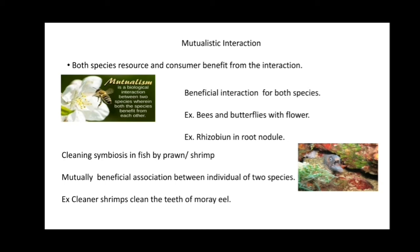Example: bees and butterflies with flowers — bees require pollen grains for making honey, and when they visit flowers they pollinate them. Another example: Rhizobium in root nodules performs nitrogen fixation. Cleaning symbiosis is also an example — fish by piranha or shrimp in a mutually beneficial association. Example: cleaner shrimps clean the teeth of the moray eel.